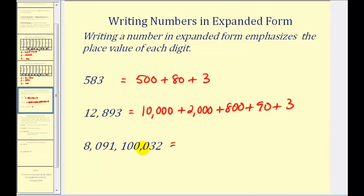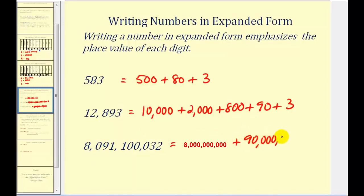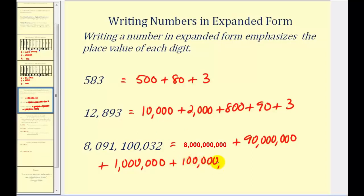For this larger number, we have the thousands, millions, and billions. So this would be eight billion, plus — because there's a zero in the hundred millions place value, we do not need to include that — so we'll have plus ninety million, plus one million, plus one hundred thousand, and the next non-zero digit is thirty, and then plus two.